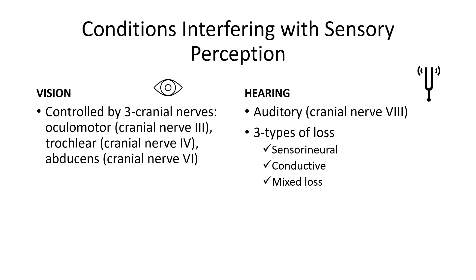Myopia is known as nearsightedness and it is the inability to see objects far away clearly. Hyperopia is the inability to see nearby objects clearly. Astigmatism is a defect within the eye that makes objects near and far look blurry or distorted. Presbyopia is age-related farsightedness – a gradual decrease in the ability to see objects clearly nearby. This often starts during middle adulthood.